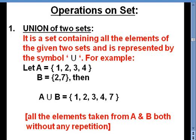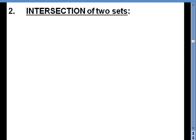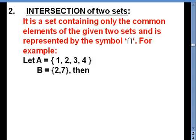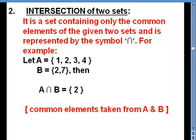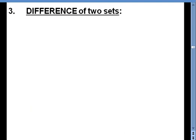The next operation is intersection of two sets. Intersection will be a set containing only the common elements of the given two sets. The representation is given on the slide. Taking the same two sets, A equals {1, 2, 3, 4} and B equals {2, 7}, the only element common is 2, therefore A intersection B equals {2}.